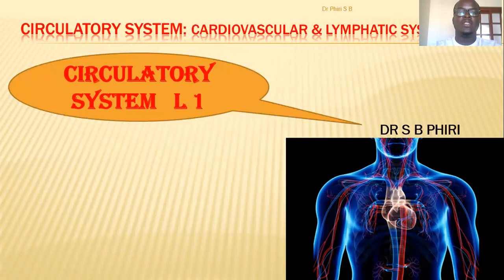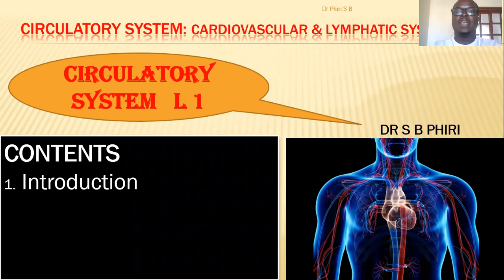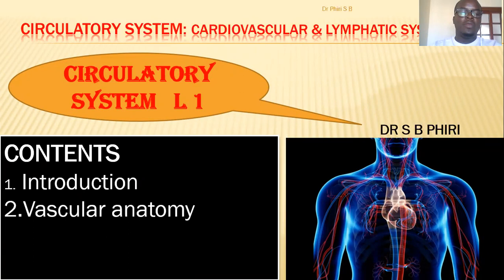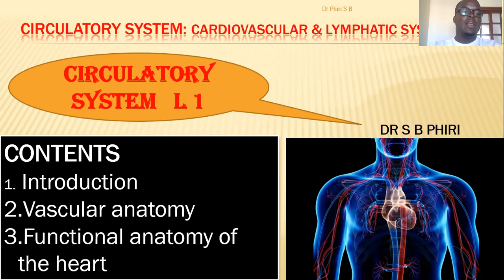This is the circulatory system lecture one. What we're going to look at in this class: a general introduction to the circulatory system, then the vascular anatomy, and then the functional anatomy of the heart. This is basically anatomy, but we are not going into details — just basic anatomy for you to appreciate the physiology later on.